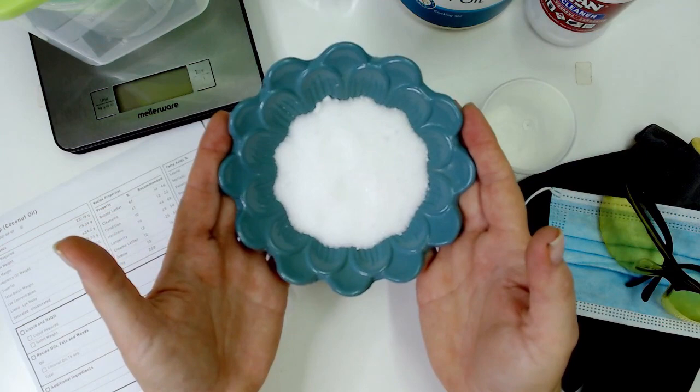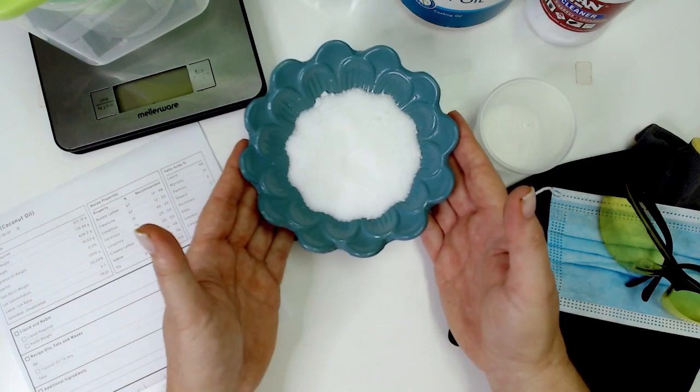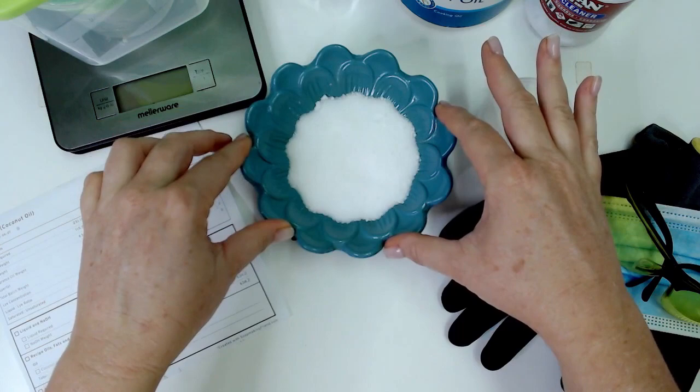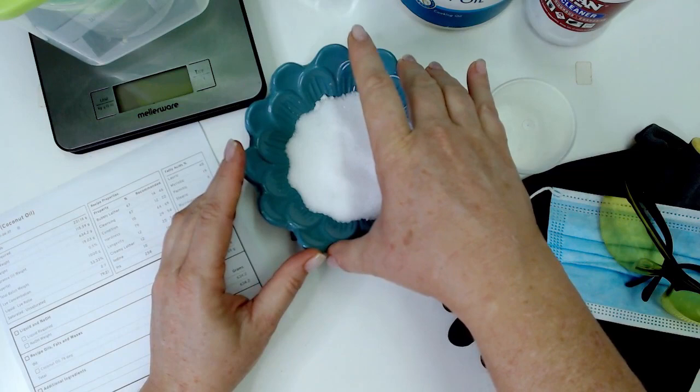The reason we're going to use citric acid in our soap is especially if you live in a hard water area. Citric acid by itself is not a chelator. But when you add it to your sodium hydroxide or potassium hydroxide, it will react with it. And then you get sodium citrate or potassium citrate. Now those two are chelators.